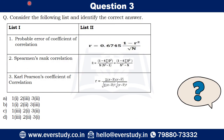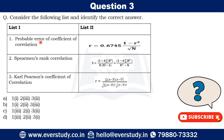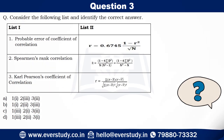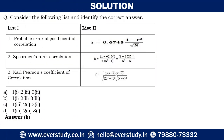Question three: consider the following list and identify the correct answer. This is a basic question — you should know the formula of probable error of coefficient of correlation, Spearman's rank correlation, and Karl Pearson's coefficient of correlation. Write down your answer. The answer is B.